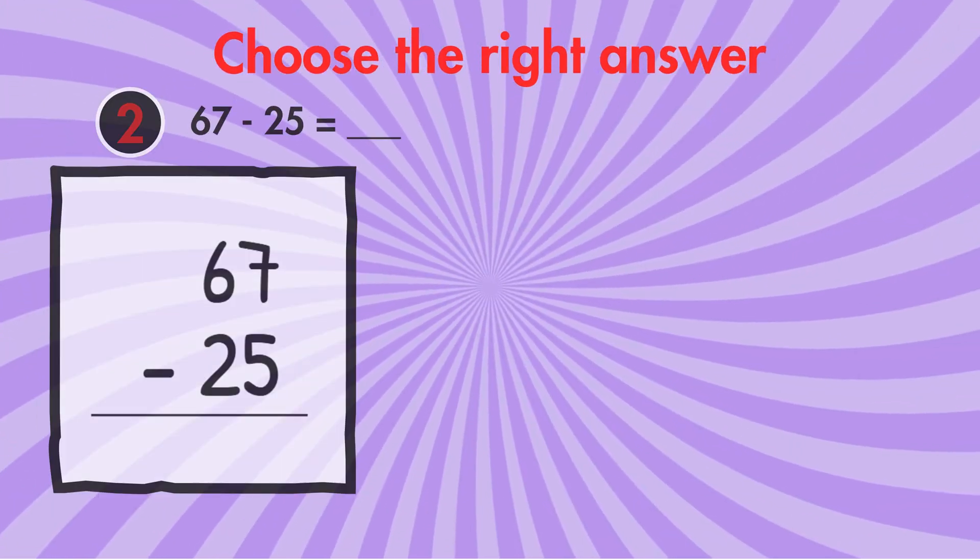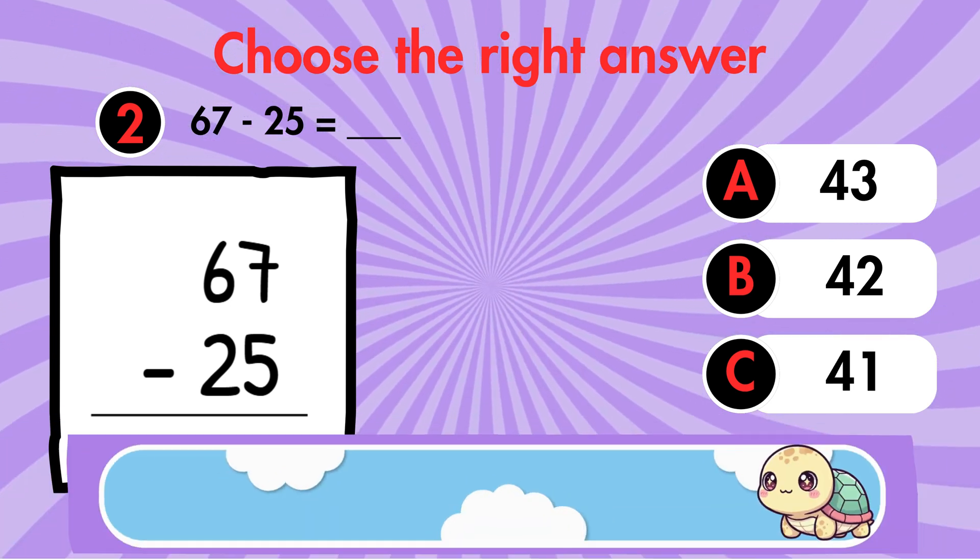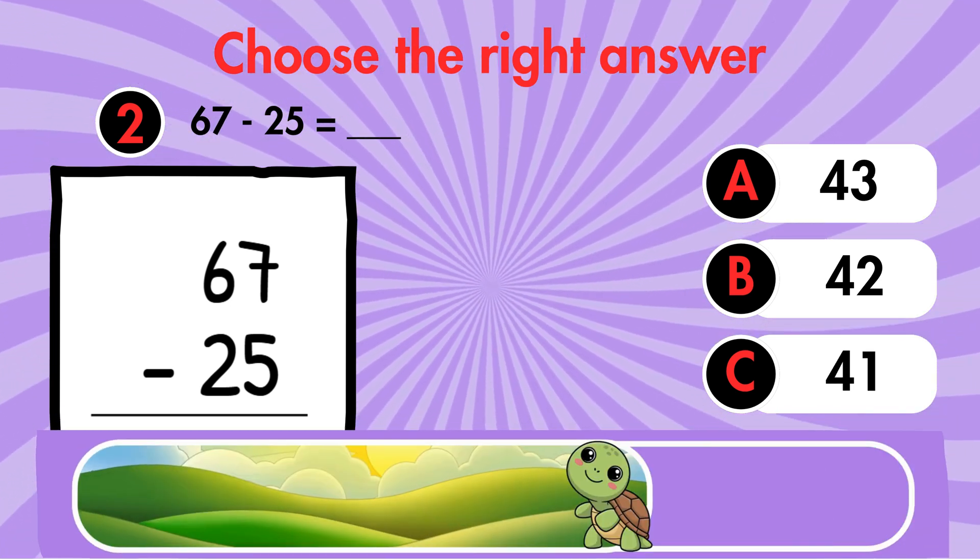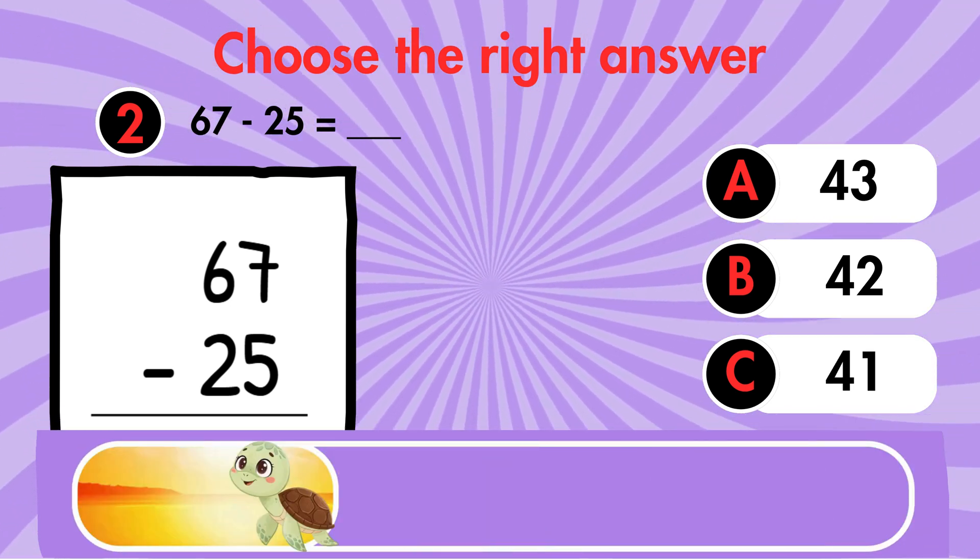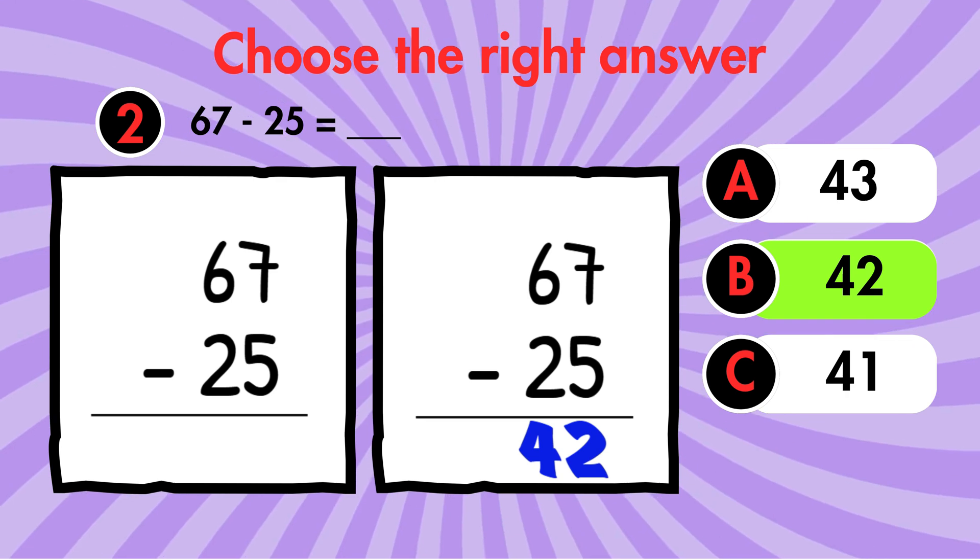Question 2. 67 minus 25 equals what? The answer is 42.